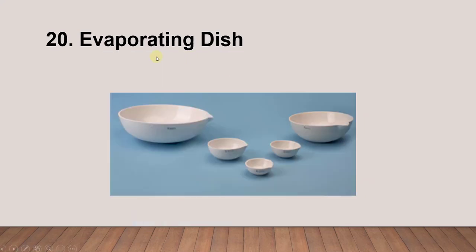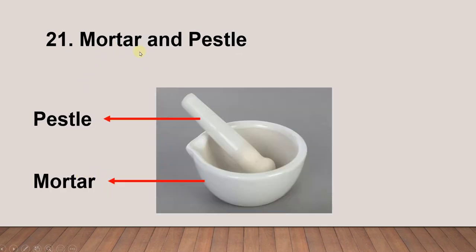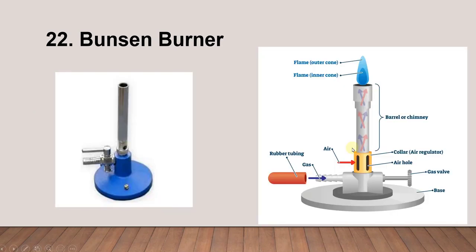Next is the evaporating dish. Next is the mortar and pestle. This is very important when you are working with a solid sample that needs to be crushed or ground. Next is the Bunsen burner.